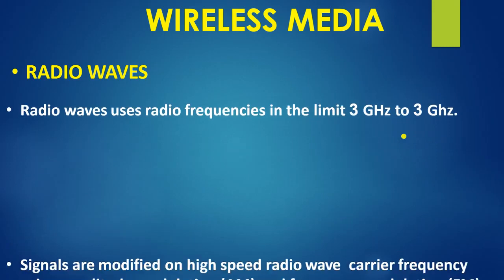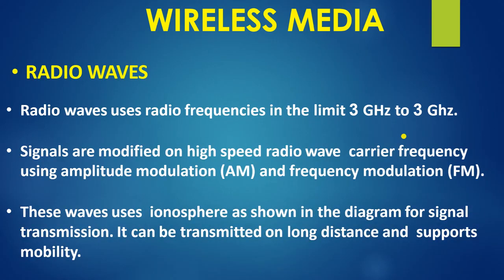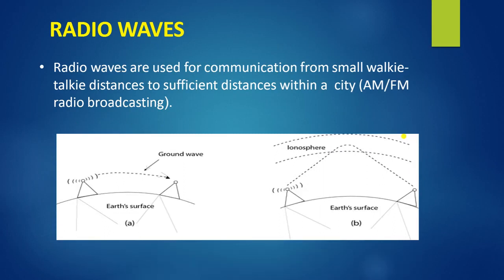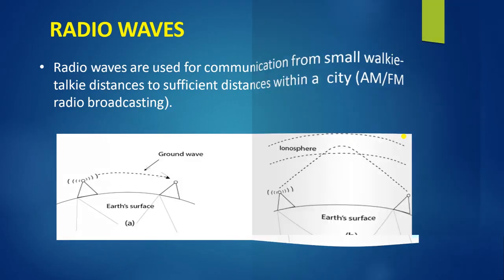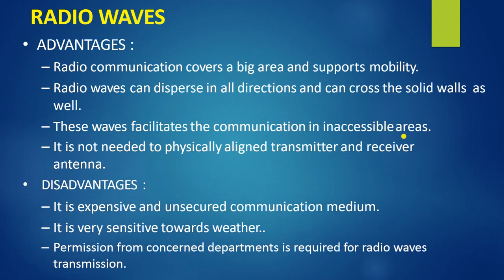In wireless media, radio waves have a frequency range of 3 kilohertz to 3 gigahertz. Signals are modulated on high-speed audio radio waves. In this diagram, you can see radio waves traveling as ground waves and also bouncing off the ionosphere. Data can be easily transmitted via radio waves. These are the advantages and disadvantages of radio waves.